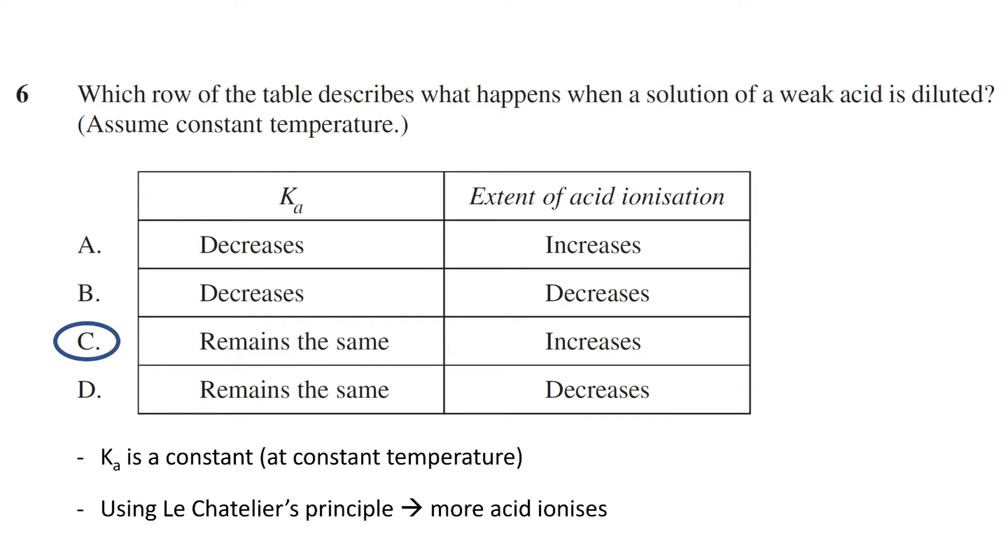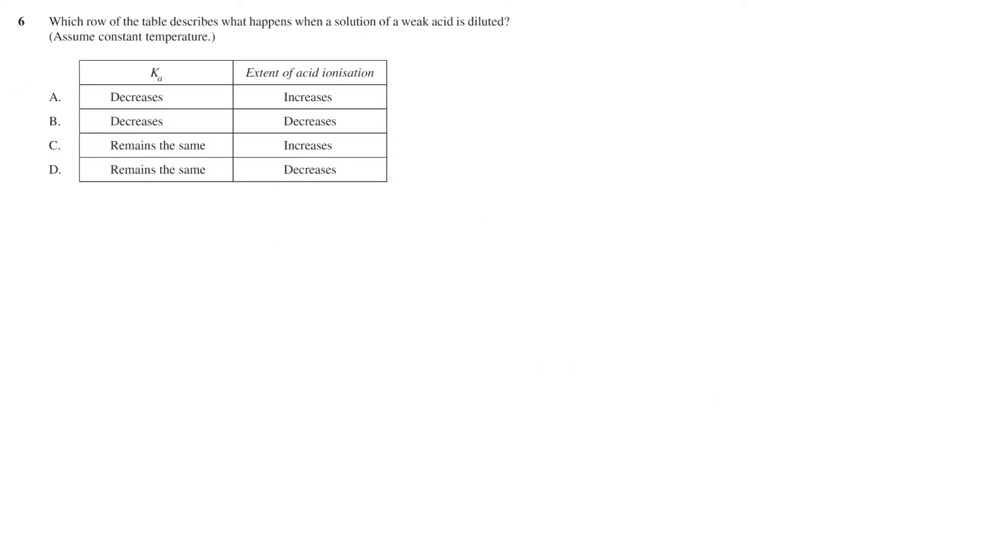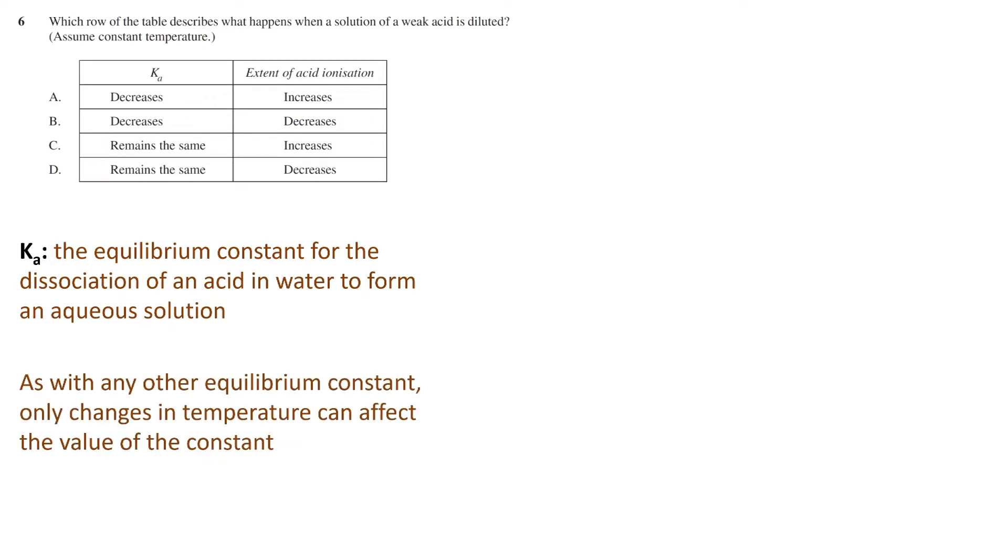Let's look specifically at how we get to this answer. Firstly, we can eliminate the first two options by recognizing what Ka represents. Ka represents an equilibrium constant, specifically the equilibrium constant for the dissociation of an acid into its ions, that is, dissolving it into water. As with any other equilibrium constant, temperature is the only factor that can actually change the value of the constant.